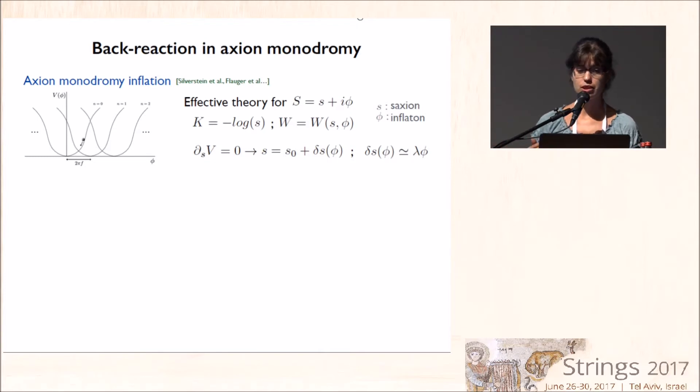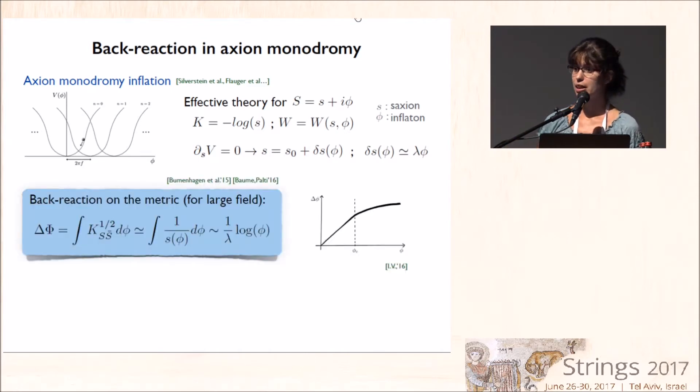So let me consider, for instance, a supergravity generalization in which, apart from the inflaton, I have a saxion, so a non-periodic scalar, which parametrizes the Kähler metric of the inflaton. And the thing is that when we move the inflaton away from the minimum, the vacuum expectation value of the saxion might change, and this will back react on the Kähler metric of the inflaton.